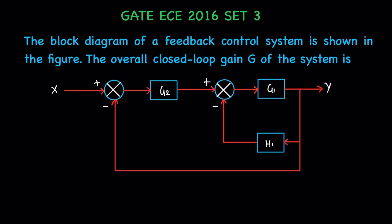The block diagram of a feedback control system is shown in the figure. The overall closed loop gain G of the system needs to be found.